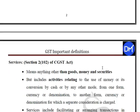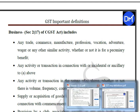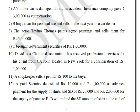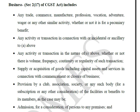In the definition of business, business means any trade, commerce, manufacture, profession, or vocation. Vocation means if you have a skill. This profession is a vocation. Business activity is assessed on the basis of volume, frequency, continuity, and regularity.